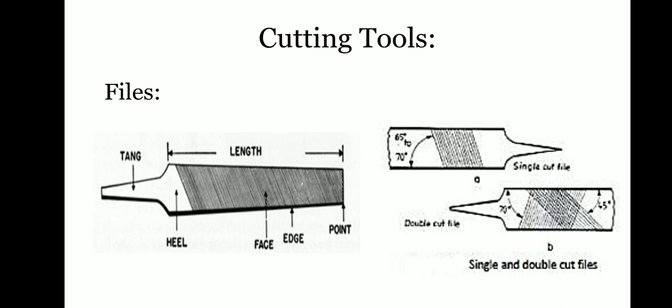A file is a metalworking and woodworking tool used to cut fine amounts of material from a workpiece. It is commonly referred to as a hand tool style which takes the form of a hardened steel bar with a series of sharp parallel ridges called teeth.